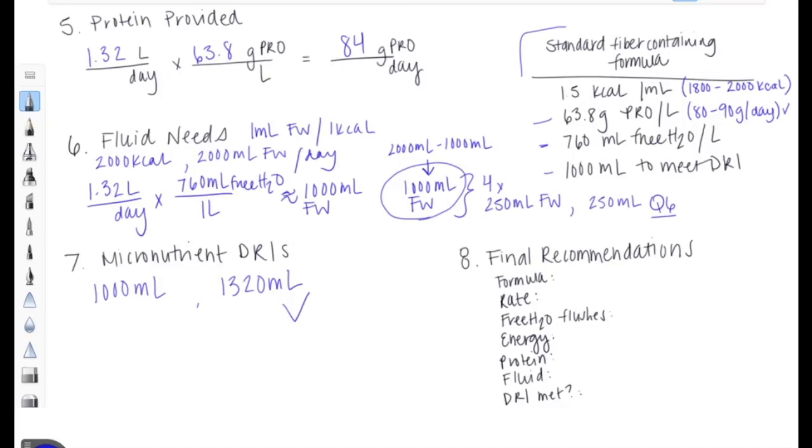Now, the final step of this process, writing your end recommendations. After going through all these calculations, we've now determined that we're going to be providing our patient with a standard fiber-containing formula. This formula will be provided to our patient at a rate of 55 milliliters per hour times 24 hours. This will give us a total of 1,320 milliliters per day. In terms of fluid and free water flushes, our patient is going to need 250 milliliters Q6, meaning four times a day, or an additional 1,000 milliliters provided per day.